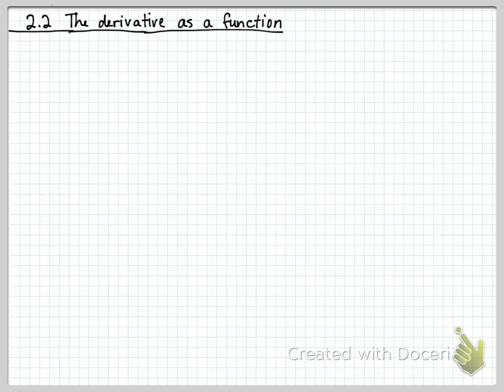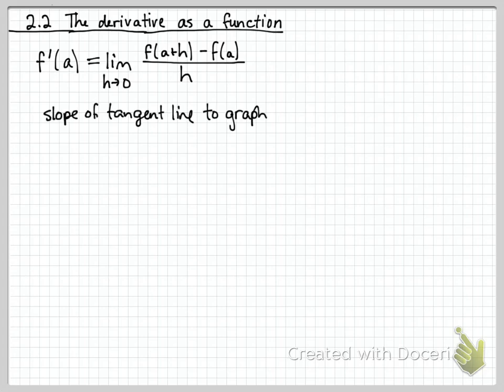Last time we talked about the derivative f prime of a, which tells you the slope of the tangent line to f of x at the point where x equals a. Here's its definition. That limit, by the way, is always a 0 over 0 type limit. You have to actually do some work to figure out what it equals, or if it even equals anything.